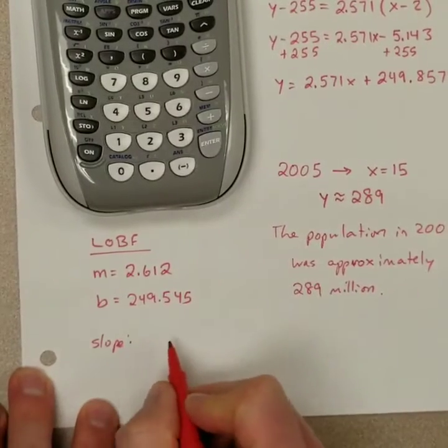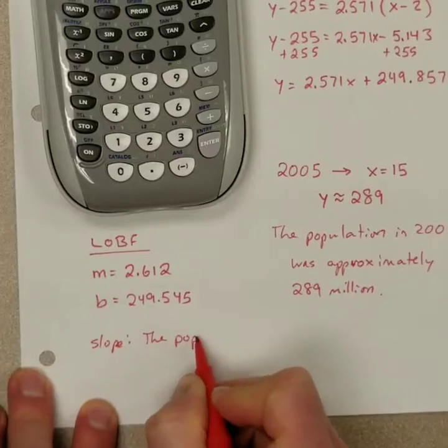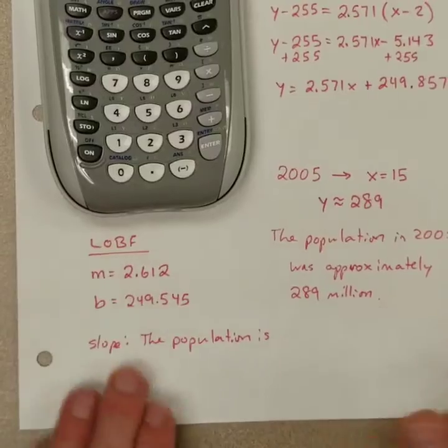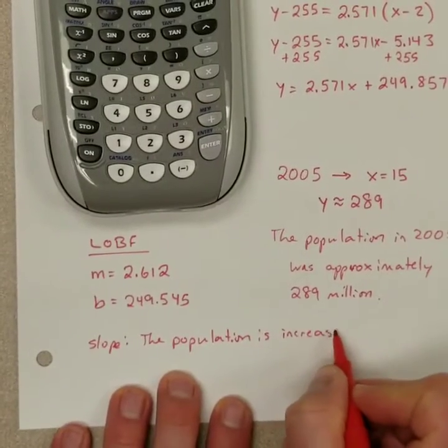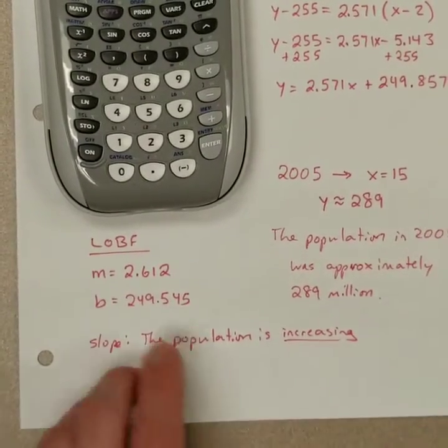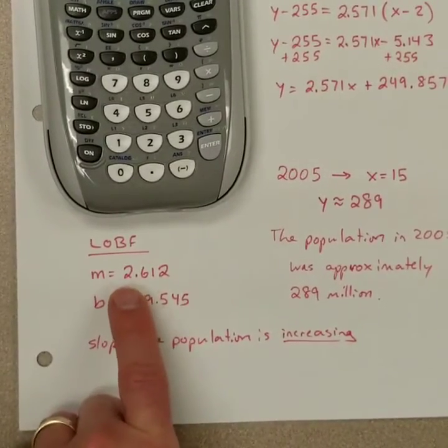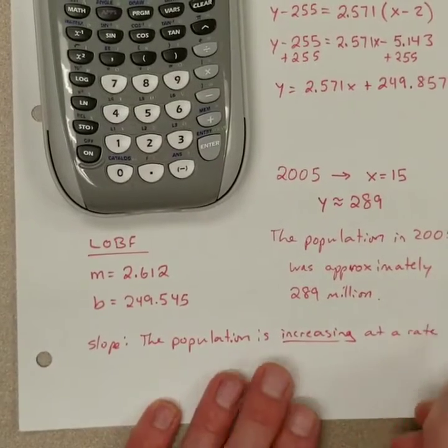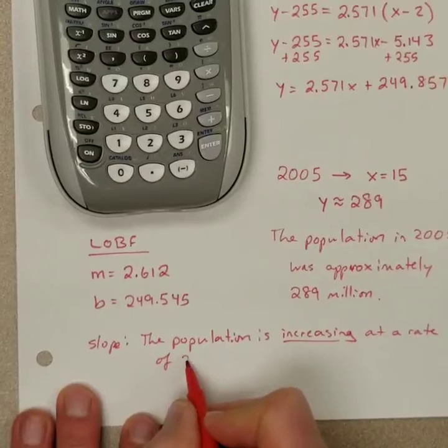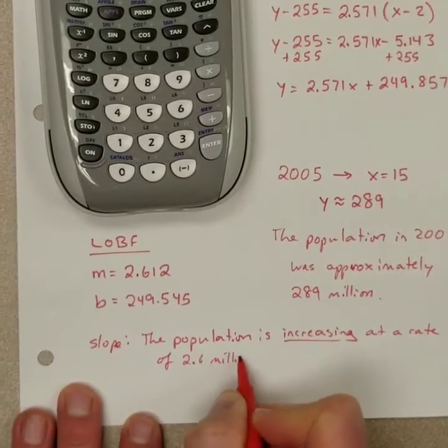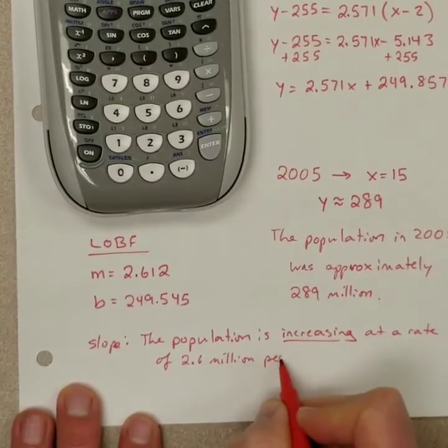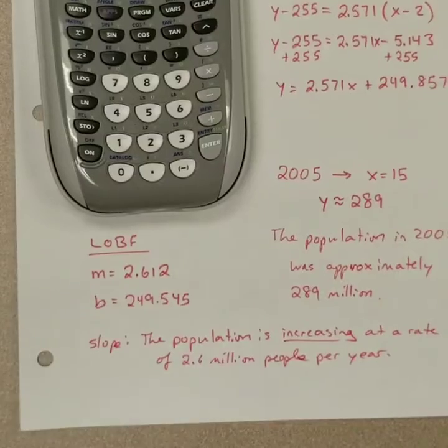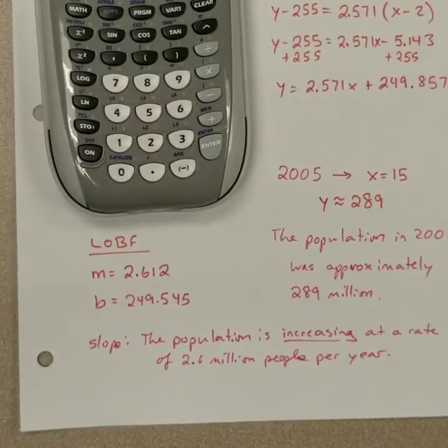And so the rise gives you the population, the Y value, and the run is your X, which is your years. So its population is people per year as an increase. So the slope to interpret that I would say the population is increasing, and that's an important word because this is positive. If it was negative it would be decreasing. Population is increasing at a rate of 2.6 million people per year. So that was the rate of increase through the 90s.